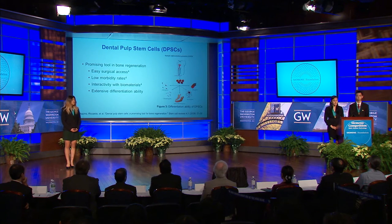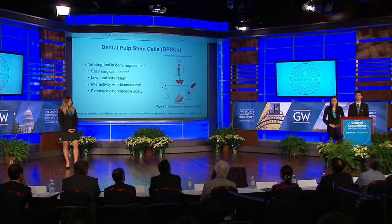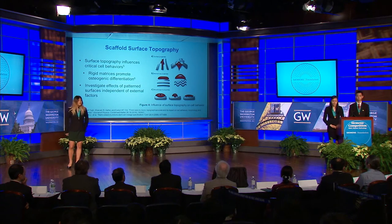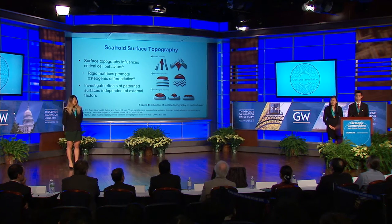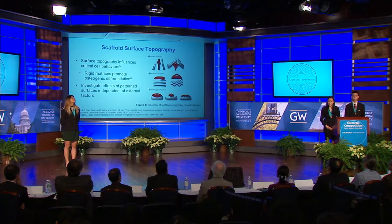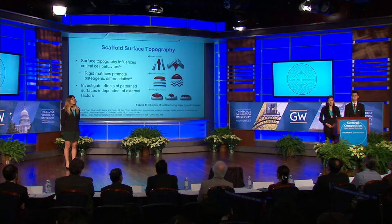Dental pulp stem cells, abbreviated as DPSCs, are a promising tool in bone regeneration as the most surgically accessible mesenchymal stem cell. DPSCs have demonstrated lower morbidity rates, high interactivity with biomaterials, and extensive diffraction ability, as shown in Figure 3. Most notably, surface topography has been shown to be a critical influence in cell behavior. Specifically, multi-scale pattern topographies have shown influence in cell adhesion, proliferation, and differentiation of DPSCs.